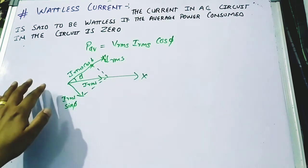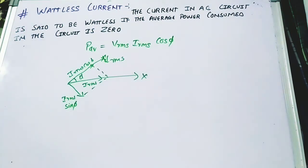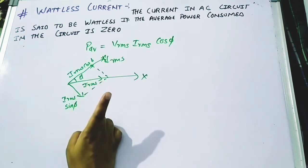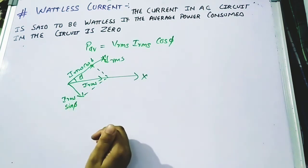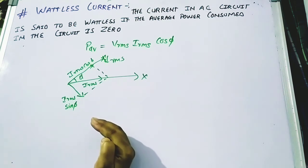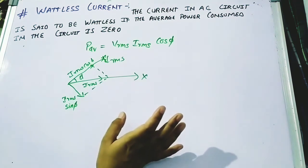The wattless power is represented as P_average = V_RMS × I_RMS × cos φ. This is the expression used for wattless current. Wattless current is called the ideal current, where the component considered is only I_RMS × sin φ. In the case of resistance, current and voltage are in phase, but for capacitance and inductance they are out of phase. The I_RMS × sin φ component is the wattless current because it does not contribute any power in the AC circuit.